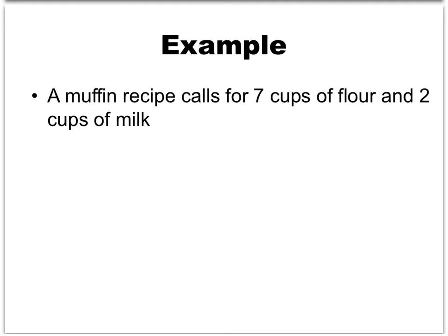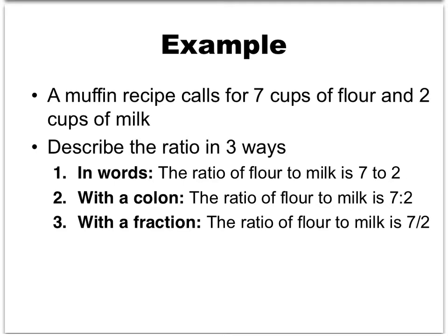To illustrate this definition, let's look at this example. A muffin recipe calls for seven cups of flour and two cups of milk. Notice that we've got two quantities involved here — the seven cups of flour and the two cups of milk — and they are related, so we're going to be able to describe these with a ratio. The first way is to describe it in words: the ratio of flour to milk is 7 to 2.